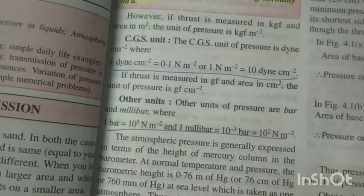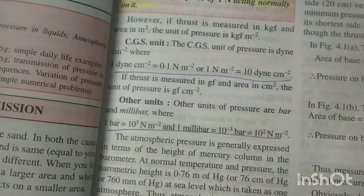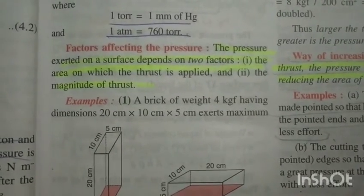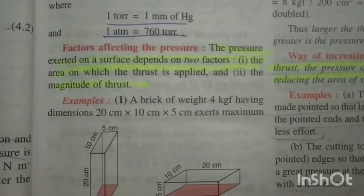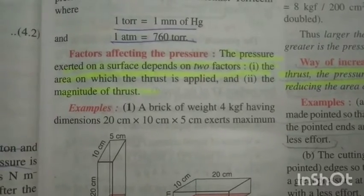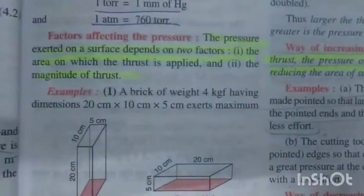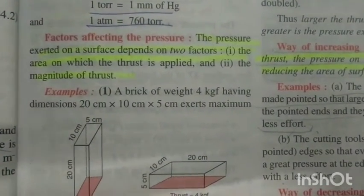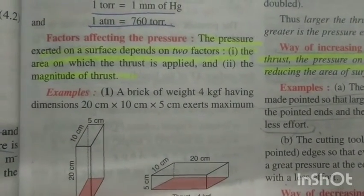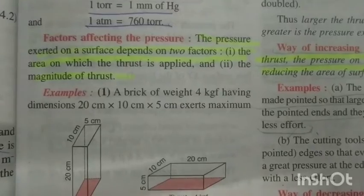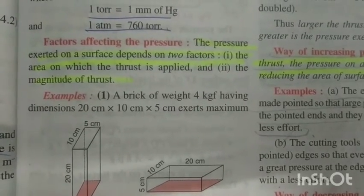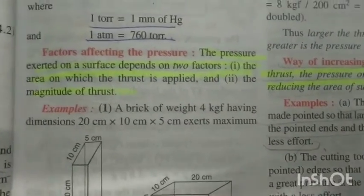Next are the factors affecting pressure. Pressure depends on two factors: the area and the magnitude of thrust. As I told you, if the area is large then the pressure applied will be less — as in the case of the bag strips. Larger the area, the lesser the pressure.